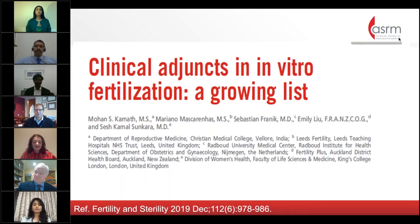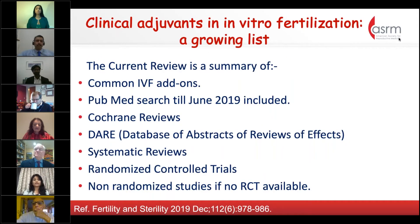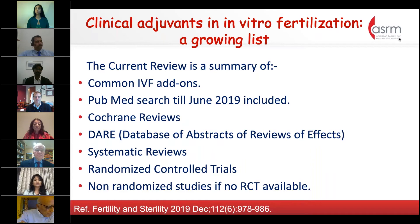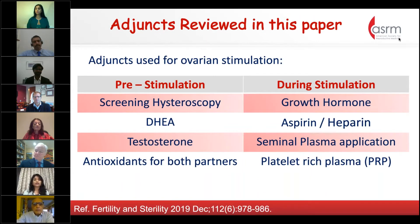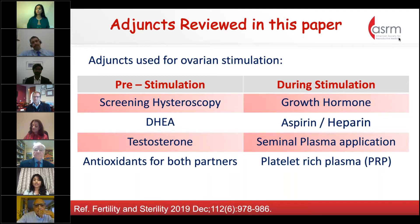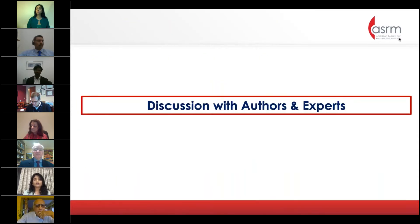The first paper is on clinical adjuncts in IVF — a growing list. This review summarizes common IVF add-ons via a PubMed search through June 2019, including Cochrane database reviews, systematic reviews, randomized control trials, and non-randomized studies when no RCTs were available. Add-ons are divided into two categories: pre-stimulation — including screening hysteroscopy, DHEA, testosterone, androgens, and antioxidants for both partners — and during stimulation and luteal phase — including growth hormone, aspirin, heparin, seminal plasma application, and platelet-rich plasma.